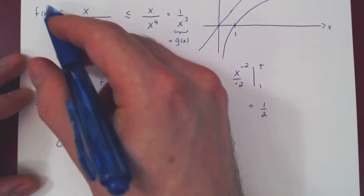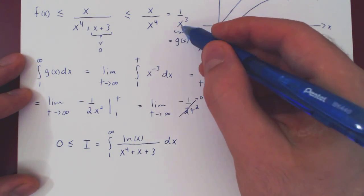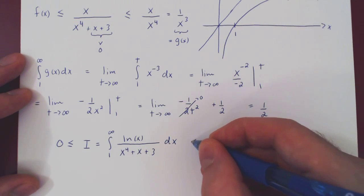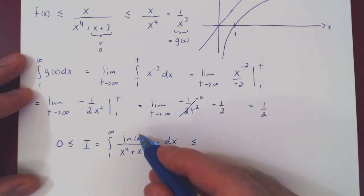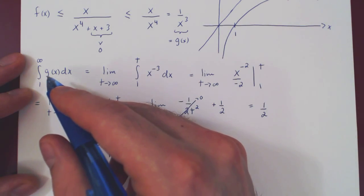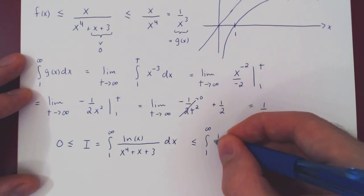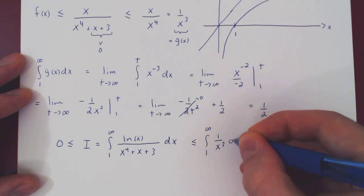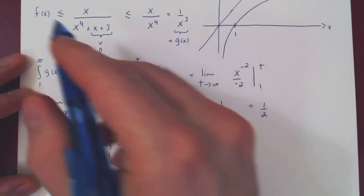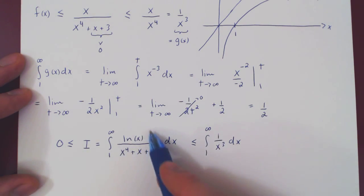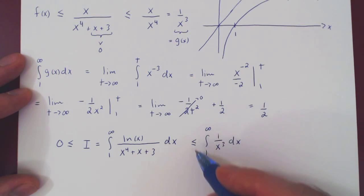But, our function was at most 1 over x cubed, and so the integral of f is at most the integral of g, as we have easily shown that the function we're integrating is smaller than 1 over x cubed. And this we have just found to be a convergent improper integral, and it is exactly 1 half.